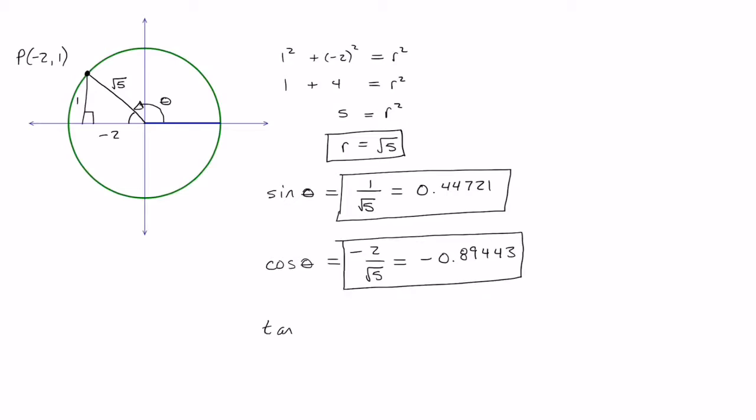Tan theta is opposite over adjacent and opposite to the reference angle is 1 and the adjacent side is negative 2. 1 divided by negative 2 is negative 0.5. What I'm going to do now is use all three of these ratios to actually find what theta is.